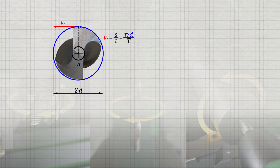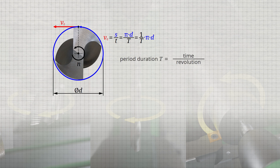This formula can also be expressed differently. At this point, the reciprocal of the period duration can be interpreted differently. Let us reconsider the meaning of the periodic time: it indicates the time per revolution of a circular motion. If we take the reciprocal of this period duration, we obtain the inverse statement.